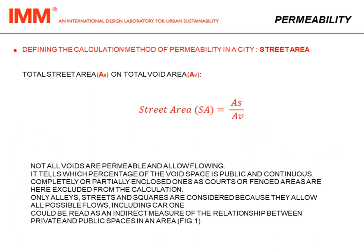Defining a calculation method for permeability, we start with a very simple value called street area. Street area is the ratio of the area of streets over the total void area. It represents the percentage of void space that is connected and therefore permeable, excluding private courts and other kinds of disconnected void space.